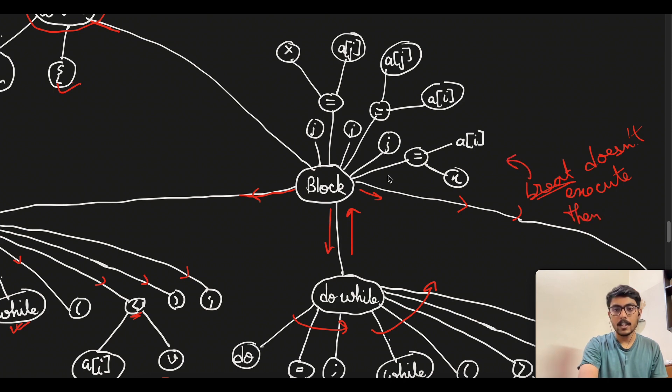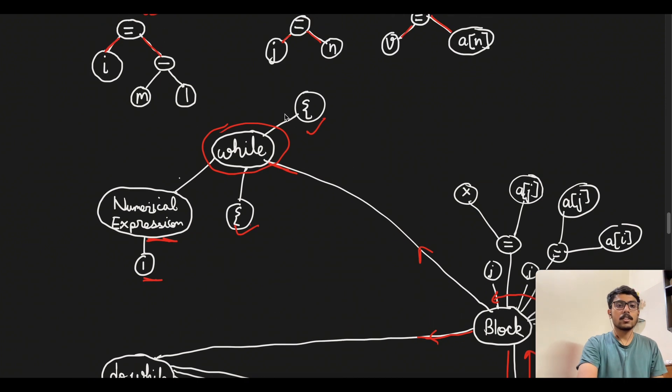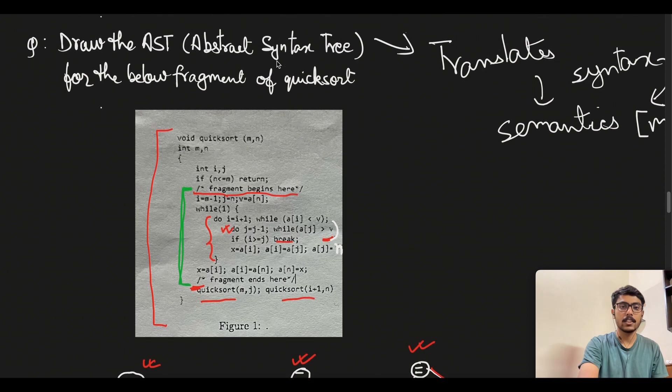Then we need to go back and execute all this. We will see x is equal to a of i, semicolon, then a of i is equal to a of j, semicolon, then again a of j is equal to x. Then semicolon again. Once it executes, we will go back to the while loop and then finally the closing bracket will occur and we will know that the execution has finished. This is how we create the abstract syntax tree of a particular piece of code.